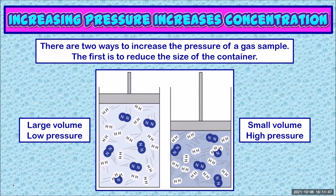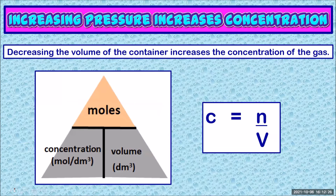Remember, gas pressure is caused by collisions between gas particles and the walls of the container. If the container is more crowded, there will be more wall collisions. From our studies of concentration, we know that concentration is equal to moles over volume. So if the volume is smaller, the concentration is larger because you have the same number of moles of gas but you're just dividing it by a smaller number.